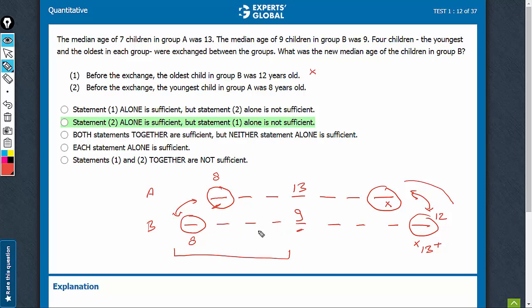So, here, nothing will change. And we know that 13 is the median here, while the oldest person here is 12 years old. So, the oldest guy here is definitely going to be more than 13 years old.